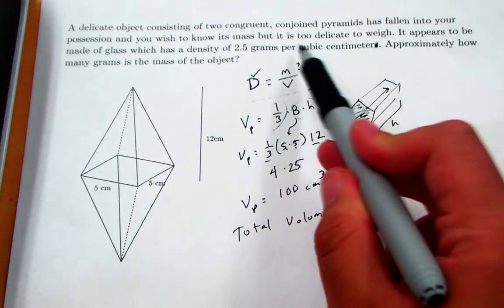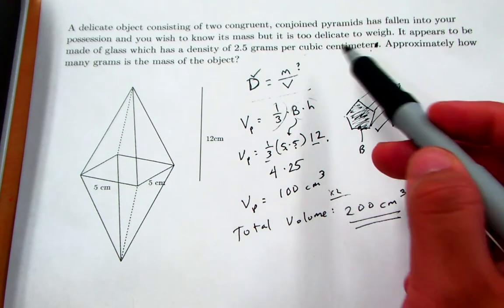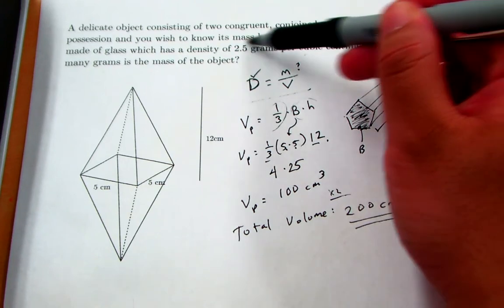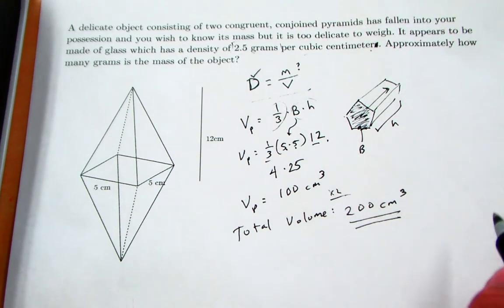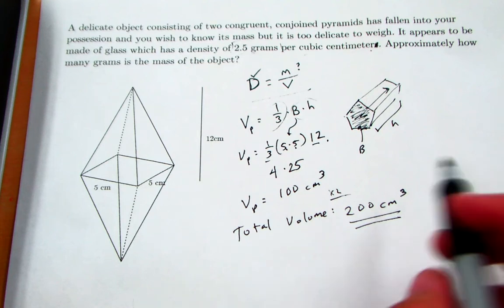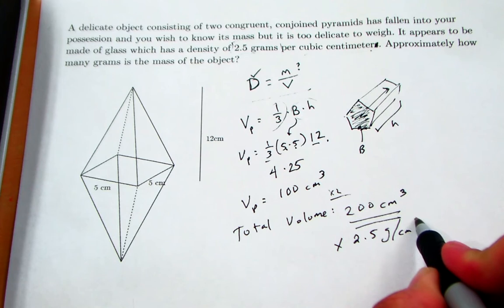Well, each one of those cubic centimeters, per cubic centimeter, weighs or has a mass, which on Earth is interchangeable, has a mass of two and a half grams. So for every one of these 200, you have two and a half grams of mass.